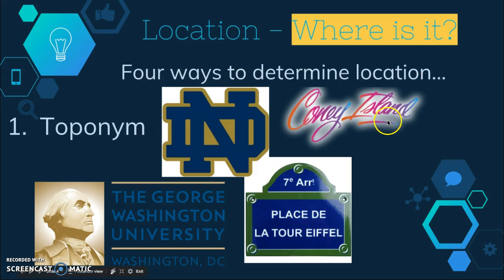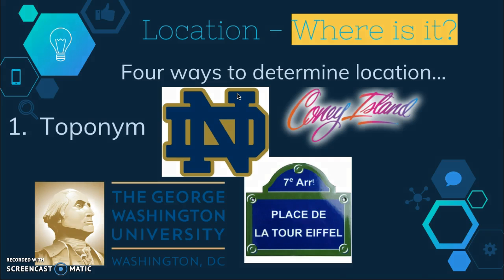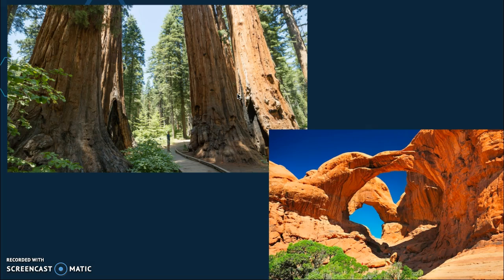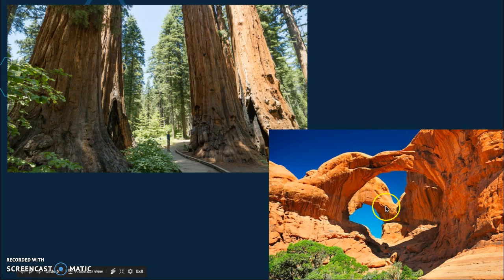Some examples: Washington DC is reflective of the first president of the United States. George Washington University is also reflective of that and is found in Washington DC. Notre Dame is an Irish Catholic University, and so it is named to reflect that. Other examples involve the physical environment — the Redwood National Forest is called that because there are redwoods in that forest.